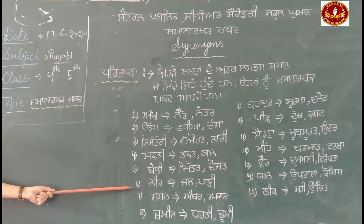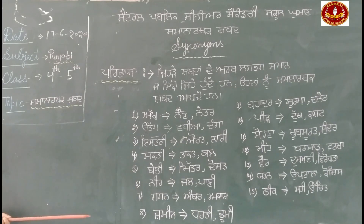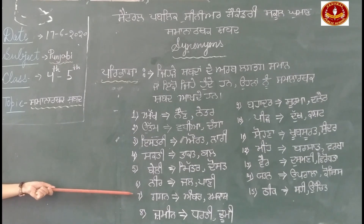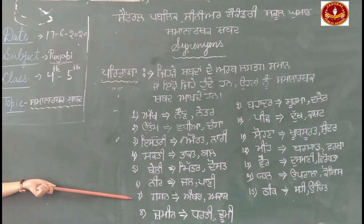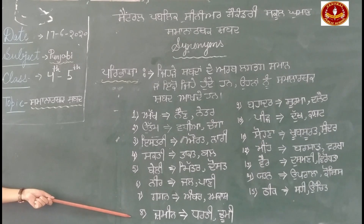ਨੰਬਰ 6: ਜਲ, ਨੀਰ, ਪਾਣੀ। ਨੰਬਰ 7: ਗਗਨ, ਅੰਬਰ, ਆਕਾਸ਼। ਨੰਬਰ 8: ਜ਼ਮੀਨ, ਧਰਤੀ।